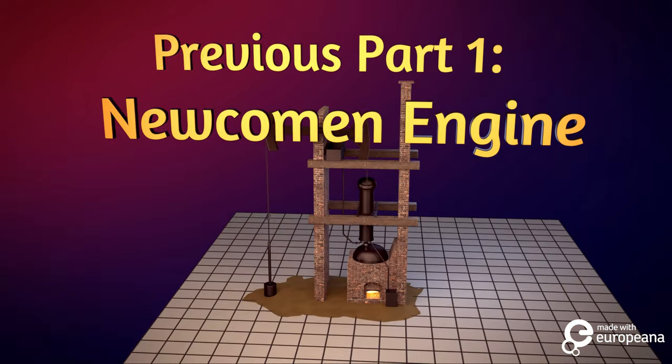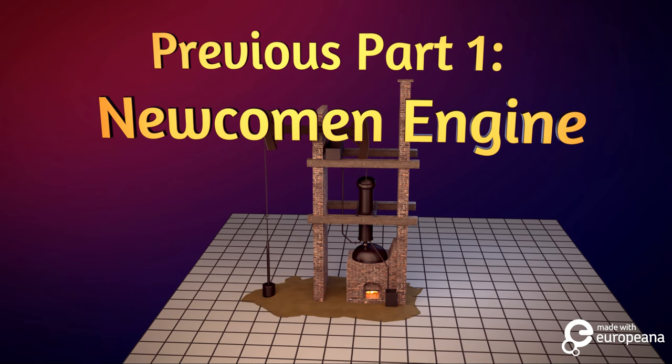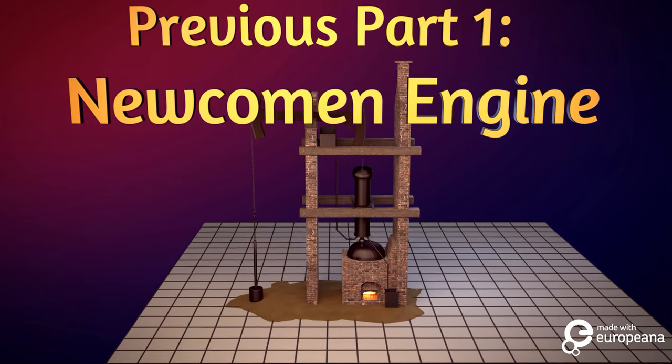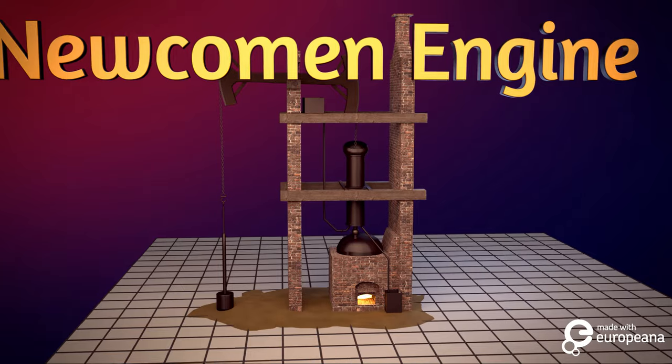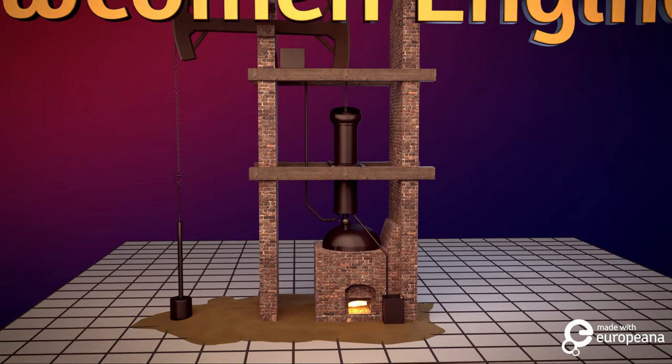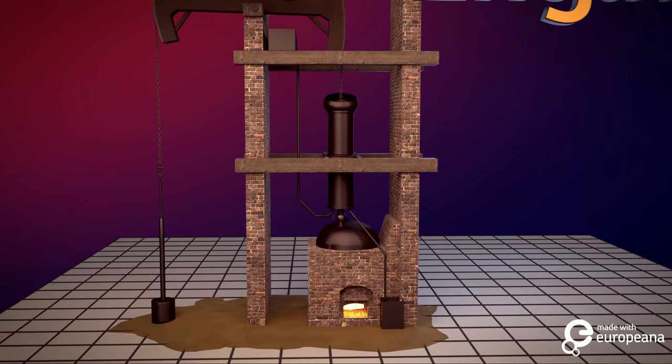In the previous video, we learned about how Thomas Newcomen invented the world's first steam engine by figuring out how to use steam to create a vacuum and move a piston in order to pump water out of a well.